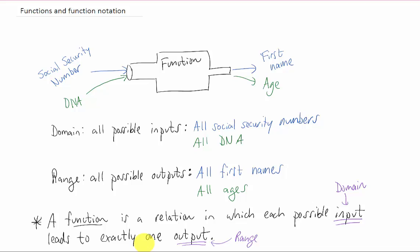There's one little hidden caveat in this definition. It's the fact that we've written down that every domain value leads to exactly one output value. If we plug something into this machine and it spits out more than one answer, that thing is not a function.